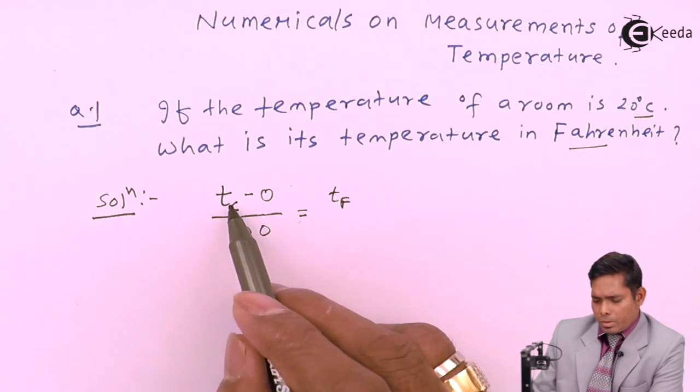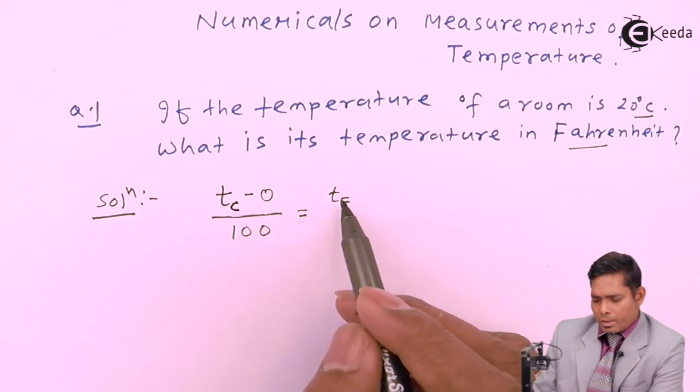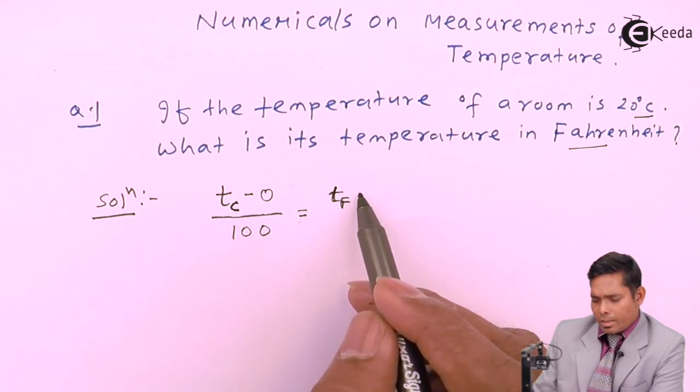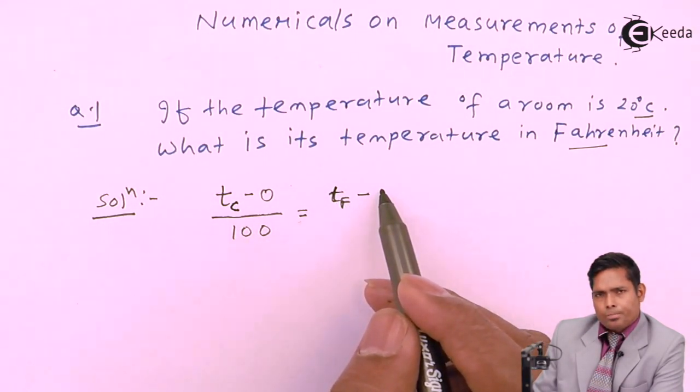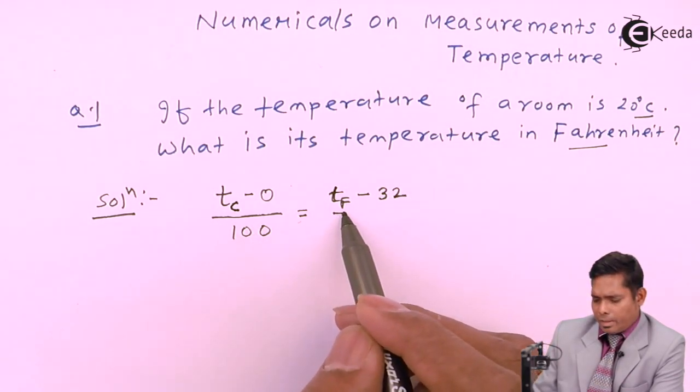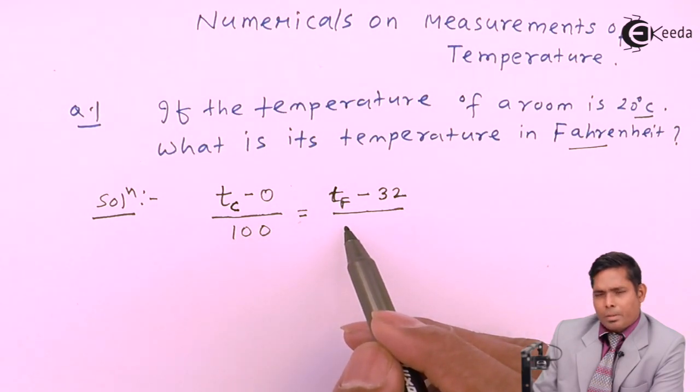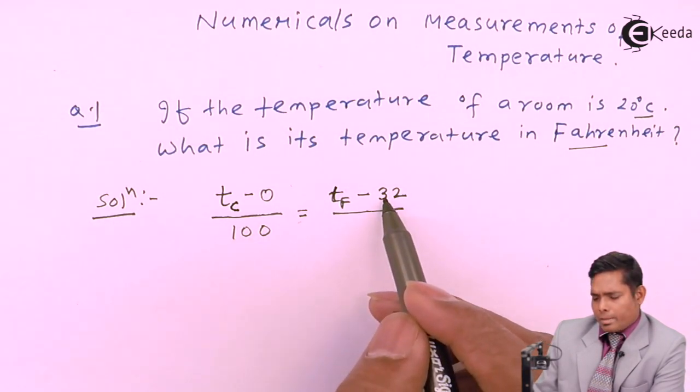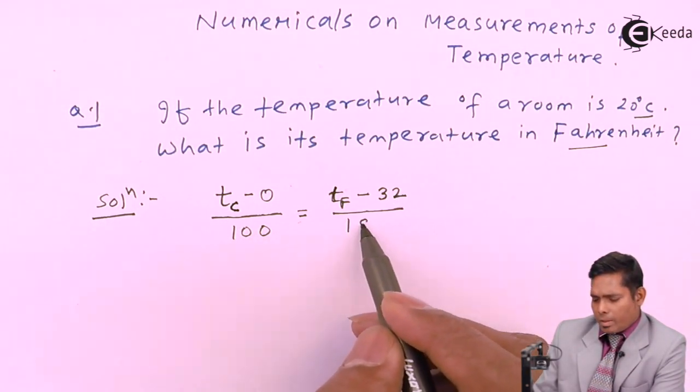This is for Fahrenheit: tf, so in Fahrenheit scale, this temperature in Fahrenheit scale will be minus the lower reading, which is 32 degree Fahrenheit, divided by the difference, 200 minus 32, that is 180.